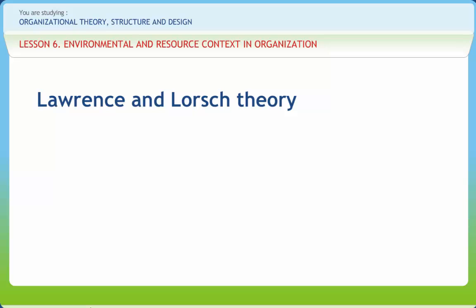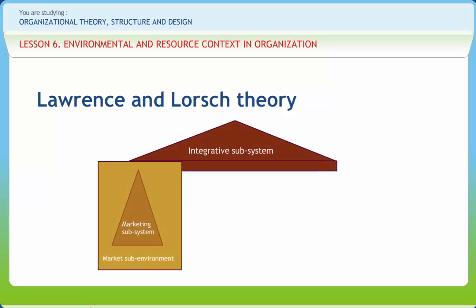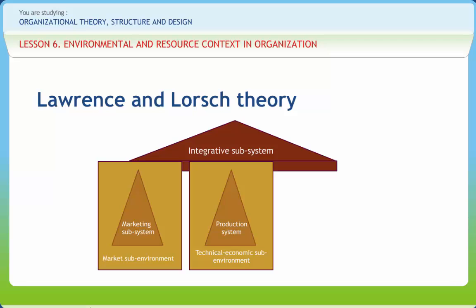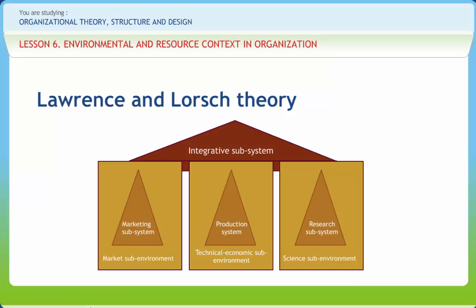Lawrence and Lorsch identified three main sub-environments: the market sub-environment corresponding to sales, the technical sub-environment corresponding to production, and the scientific sub-environment corresponding to research and development. They identified organizational subsystems as marketing, production, and research. The extent of differentiation between departments was greater in an uncertain environment than in a stable one. These conclusions were reinforced by Burns and Stalker, who concluded that organizations need different kinds of structure to adapt and respond to change. Studies indicate that organizations should adapt their structure to reflect the degree of uncertainty in their environment.